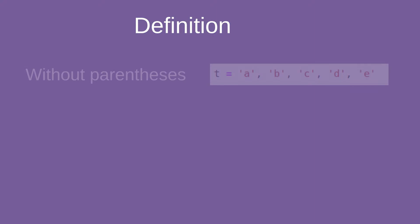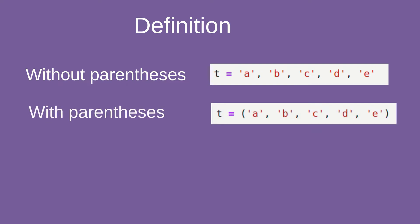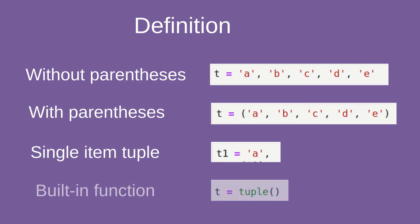How can we create tuples? We can create tuples by providing values separated by commas. Parentheses are not required, but if you want to emphasize that this is a tuple you can add them. Creating a single-item tuple can be done by a value followed by a comma. For an empty tuple you can use the built-in function tuple.